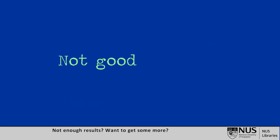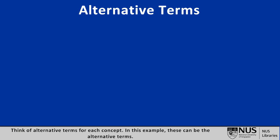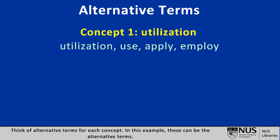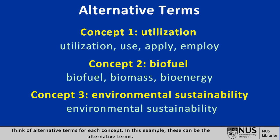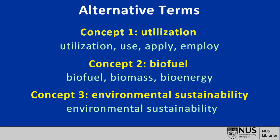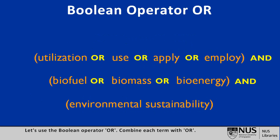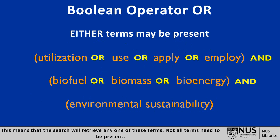Not enough results? Want to get some more? Think of alternative terms for each concept. In this example, these can be the alternative terms. Let's use the Boolean operator OR. Combine each term with OR. This means that the search will retrieve any one of these terms — not all terms need to be present.